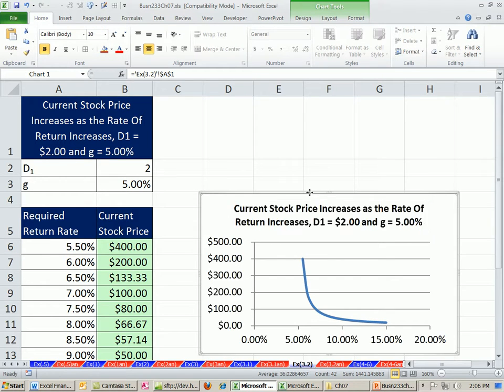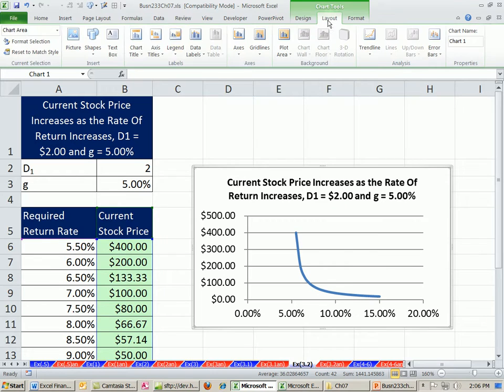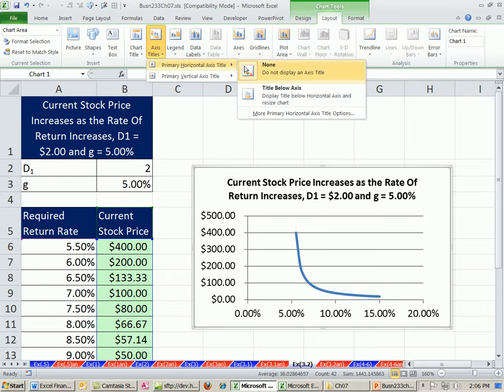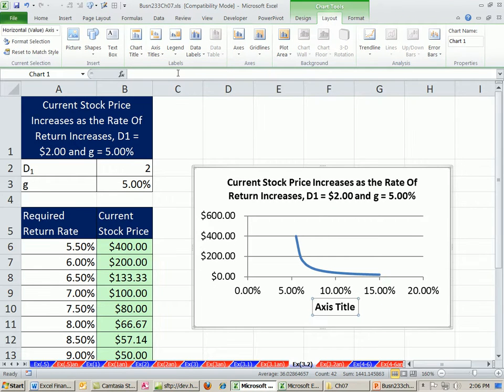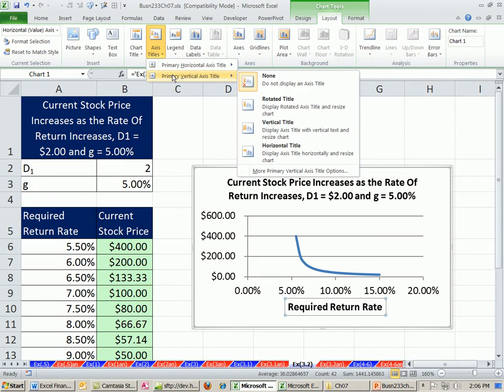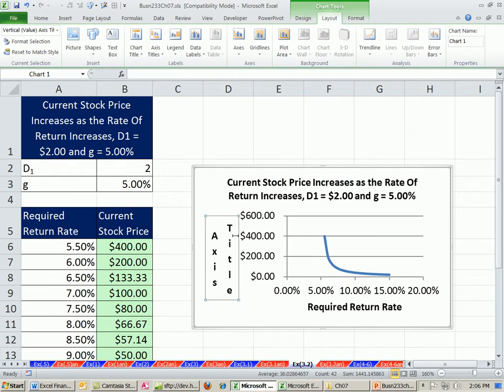All right, I need to add some labels here. Layout, Axis. I'll do the horizontal. Click up in the front of the bar, Equal, Required Return. Axis, Vertical. We'll do this one. I'm going to say, click there, Equals, Current Stock Price.